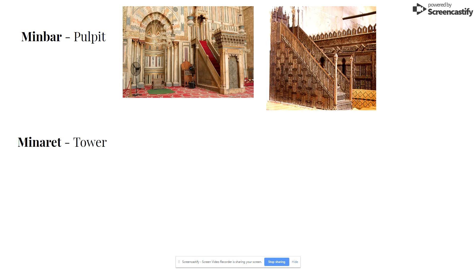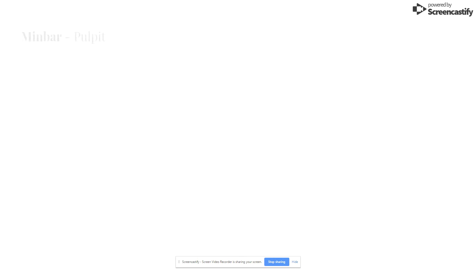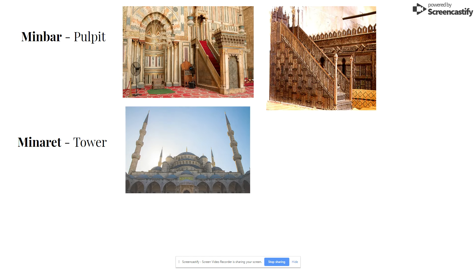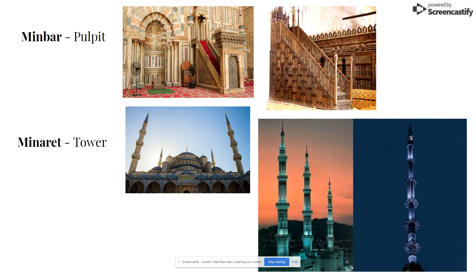The other really important term — other than Qibla, Qibla wall, and mihrab — is going to be the minaret, which is a tower. Mosques are known for, depending on where the mosque is located, quite elaborate minarets. This is from Hagia Sophia — the minarets, the towers. From those towers, the call to prayer is made five times a day, calling the faithful to prayer. Here are a couple more examples of minarets.